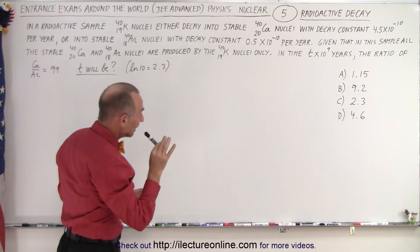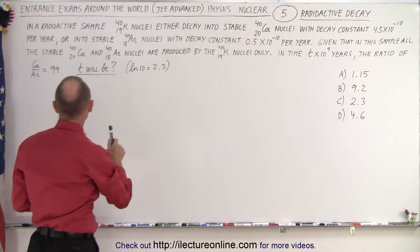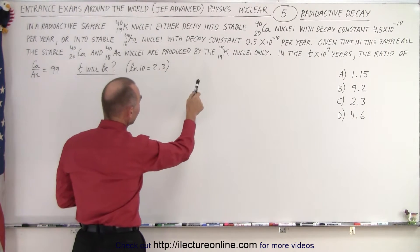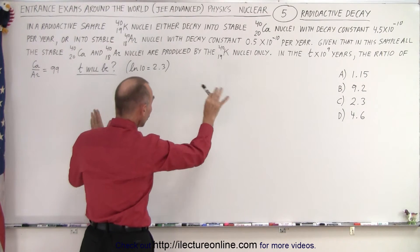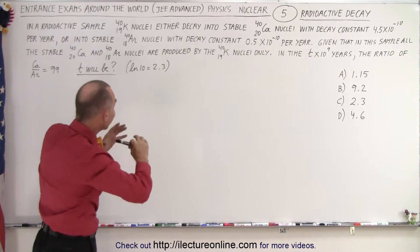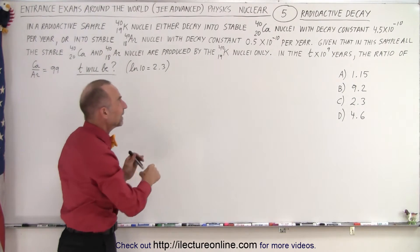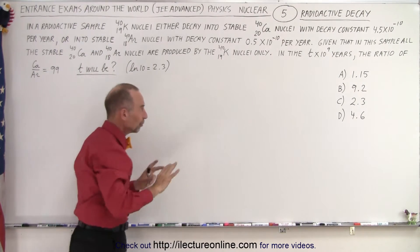Now given that in this small sample, the stable calcium and argon nuclei are produced by the potassium nuclei only. So all in the sample, the calcium and the argon that exists only came from the decay of the potassium, from nowhere else.